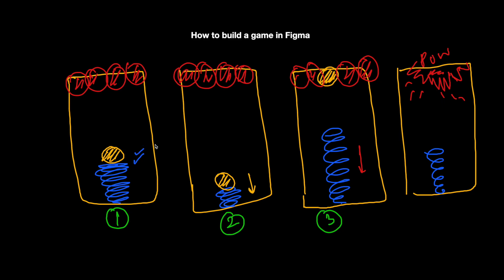If you want to make it more realistic, you can create a few more frames where the spring oscillates up and down, because a spring doesn't come to rest immediately. That's the entire idea behind the game. Once you have all the screens ready, you just prototype them one by one — the settings between screens is the tricky part. Let's build the screens first in Figma.